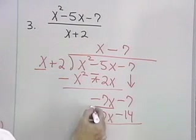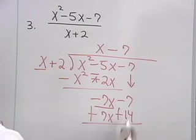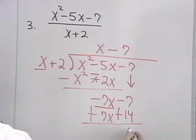Now, I want to subtract, and I do that by changing the signs and adding. Negative 7 plus 14 is going to be positive 7.